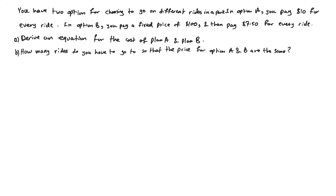In this example, you have two options for choosing to go on different rides in a park. In option A, you pay $10 for every ride. Or in option B, it's kind of like a membership cost where you pay $100, and once you pay that $100, then every time you go for a ride, instead of paying $10, you pay $7.50 for each ride.